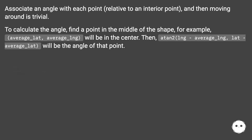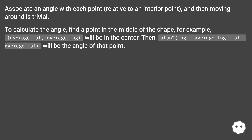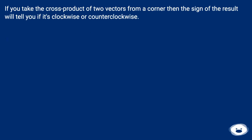Associate an angle with each point relative to an interior point, and then moving around is trivial. To calculate the angle, find a point in the middle of the shape — for example, average_lat and average_lng will be in the center. Then atan2(lng - average_lng, lat - average_lat) will be the angle of that point. If you take the cross product of two vectors from a corner, the sign of the result will tell you if it's clockwise or counterclockwise.